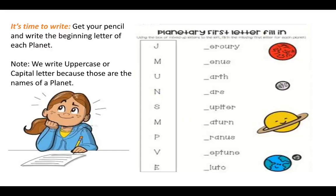How about the next activity? It's writing time. Get your pencil and write the beginning letter of each planet. Did you still remember the 8 planets? Good job! But this time, you are going to write in the uppercase or capital letter. Why? Because that is the name of the planet. Same as your name, you are writing your name beginning with uppercase letter or capital letter, right? Write in this one, planetary first letter fill-in. I have here the names of the planets. All you have to do is to choose the beginning letter of each planet. I have here J, M, U, N, S, M, P, V, and E. I know you can do it.